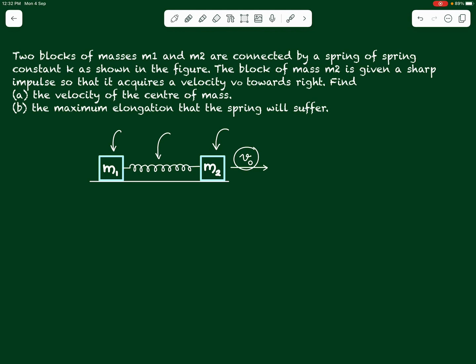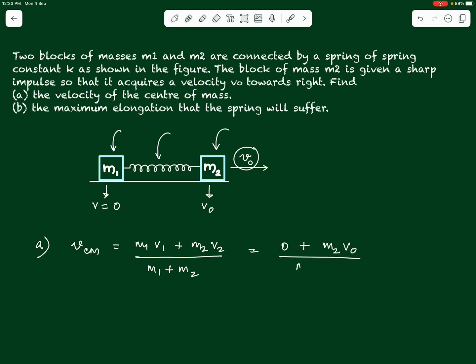At t = 0, when m2 was given velocity v0, the state of the system is: m1 is still at rest with velocity 0, and m2 has velocity v0. We are asked to find the velocity of the center of mass. Using the definition directly: v_cm = (m1*v1 + m2*v2)/(m1 + m2) = (0 + m2*v0)/(m1 + m2) = m2*v0/(m1 + m2). That is our answer for the velocity of the center of mass.